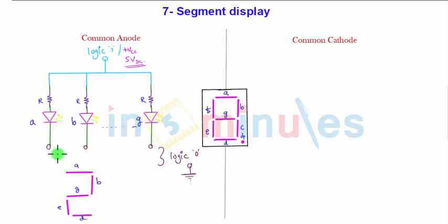So common anode configuration, make sure that for lighting up any of the segment you have to connect that segment to the ground state, that is zero state. So I will show you the ground state and you can connect the segments to ground to light them up as per the display required. Now you might have got the complete idea about how the common cathode will work. So let us move to the common cathode.